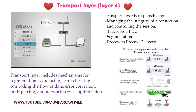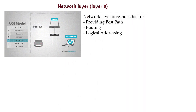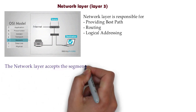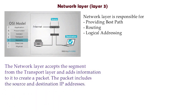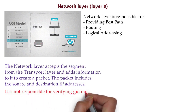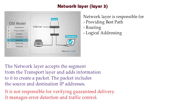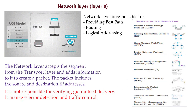Now layer 3, the network layer. The network layer is responsible for providing best-path routing and logical addressing. It accepts a segment from the transport layer and adds information to create a packet. The packet includes the source and destination IP address. It is not responsible for verifying guaranteed delivery but manages error detection and traffic control. Some protocols are ICMP, RIP, and OSPF.